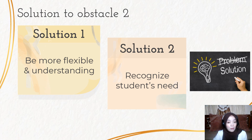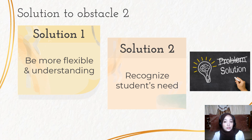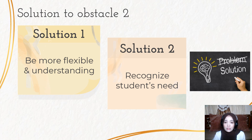The solution for obstacle 2 is to be more flexible and understanding, and to recognize students' needs. One way to solve communication problems is by giving students flexibility when they ask for more time — so I allow students exceptions to submit their work later. We must also recognize the need to contact students and understand what activities can accomplish your goals. We should provide a platform for students to communicate and collaborate with classmates, such as WhatsApp or Telegram groups, but avoid excessive spamming, which can lead to students leaving the group.